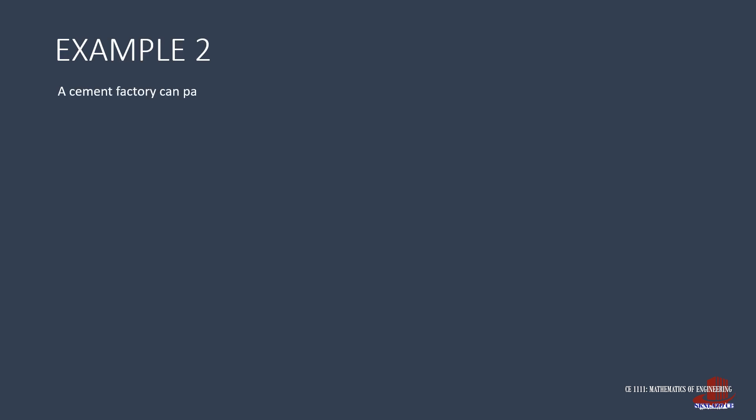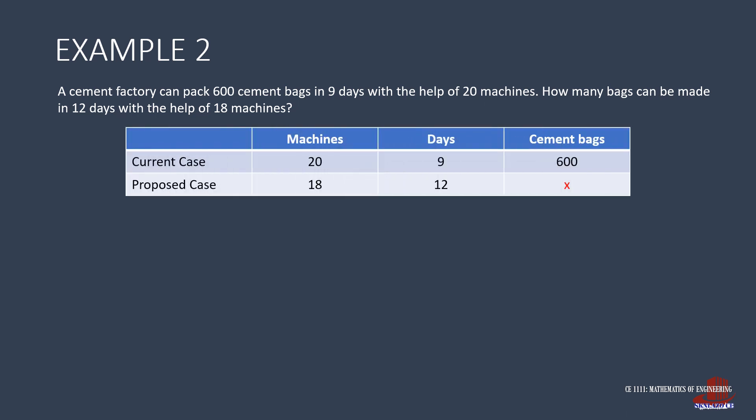The second example discusses a cement factory which can pack 600 cement bags in 9 days by using 20 machines. The question is how many bags can be made in 12 days by just 18 machines. Categorize each element under machines, days, and cement bags. The first case is 20 machines work for 9 days to complete 600 bags. The question lies with the number of bags produced by 18 machines working for 12 days.